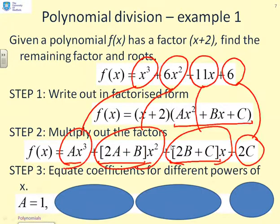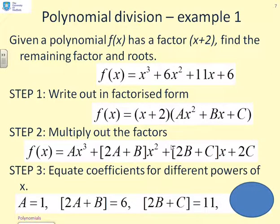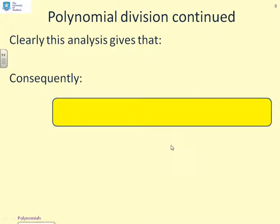So, the first implication, ax³ = x³, tells you that a has got to be 1. The second equivalence, 2a + b must be equal to 6. Now, I've already got that a = 1, so this is going to give me b = 4. Next, 2b + c = 11. Now, if I've got b = 4, this is going to give me c = 3. And finally, 2c = 6, which confirms for me that c = 3.